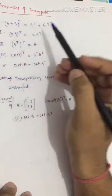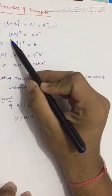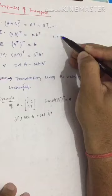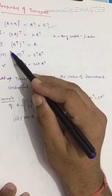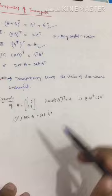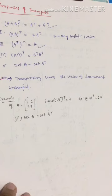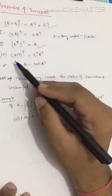The first property is: (A + B)-transpose = A-transpose + B-transpose. The second property is: (kA)-transpose = k·A-transpose, where k is any constant or scalar. The third property is: (A-transpose)-transpose = A, meaning if you take a matrix, take its transpose, then take the transpose of that transpose, you get the original matrix back.